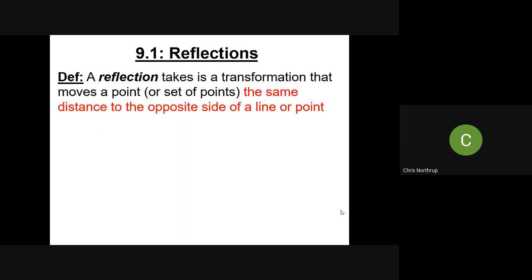The first type of transformation is a reflection. So you can think of this as like a flip. The best way to describe a reflection would be to flip a point or a set of points over a line typically. So it's going to take a point or set of points and move all to the opposite side of a line or a point the same distance.